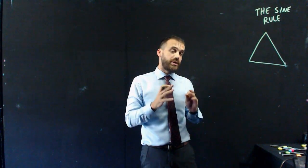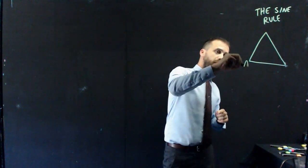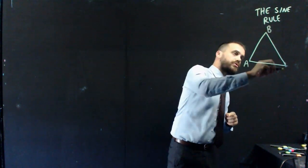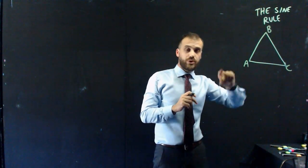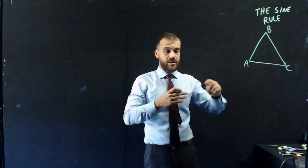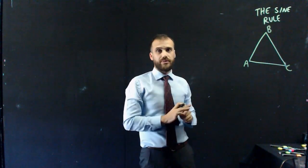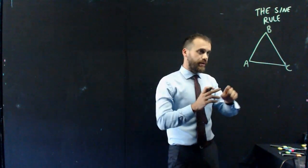First of all, we need to label up our triangle. I'm just going to, at random, pick three of the vertices, A, B, and C. It doesn't matter which one you label A or B or C. You can do whichever one you want. I'm just labeling them like that.